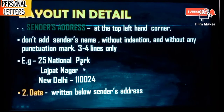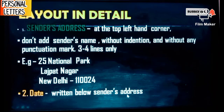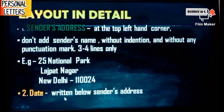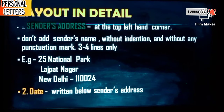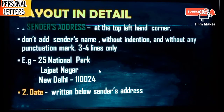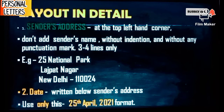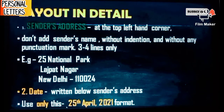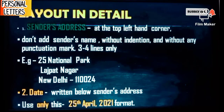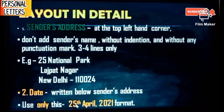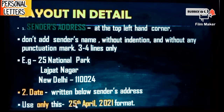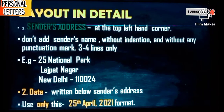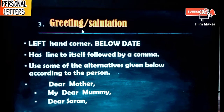Below the sender's address, we write the date. The date should be written in a specific format: first the date, then the name of the month, then the year. This is the only format the ICC accepts — do not use any other format. For example: 25th April, 2021. This format should be fixed. After the date comes the greetings or salutation.